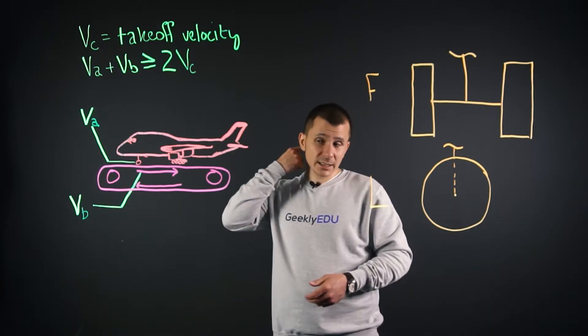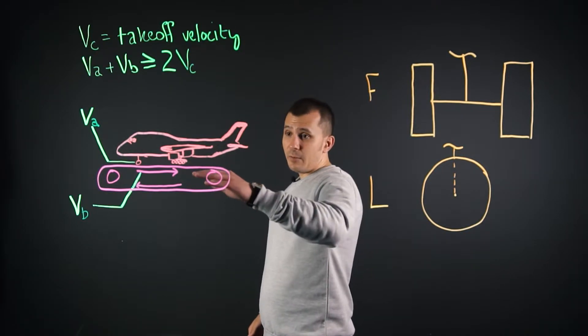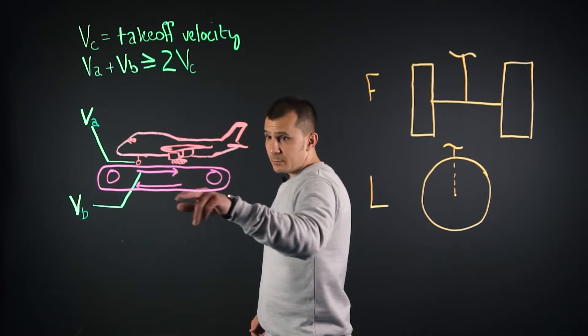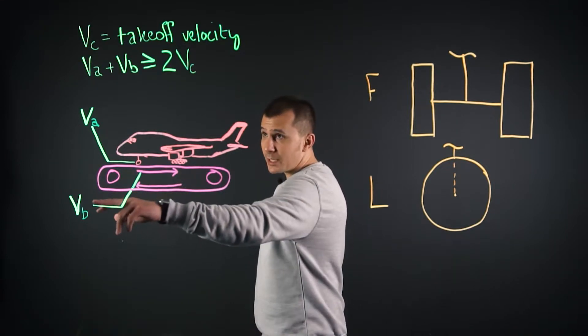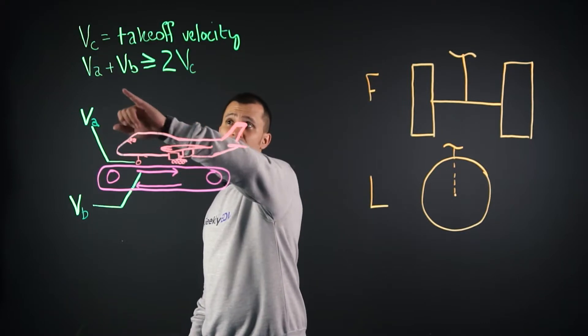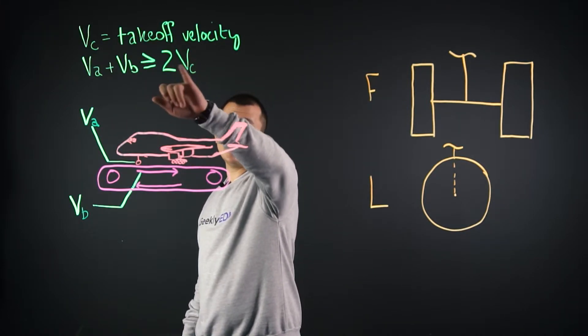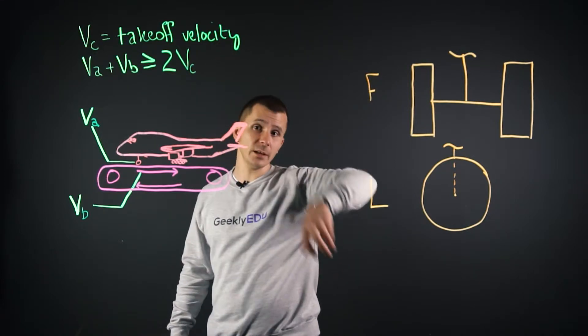So in regards to this, essentially what we're facing is when the conveyor is spinning or the surface is moving at velocity B and the wheels are moving at velocity A, we need those two together to be greater than or equal to two times the velocity of takeoff or takeoff velocity.